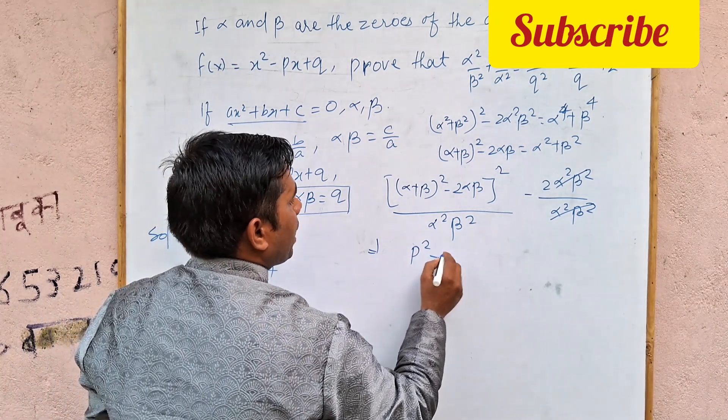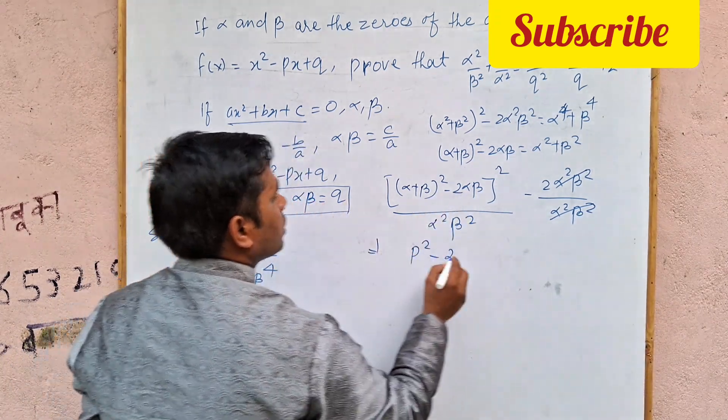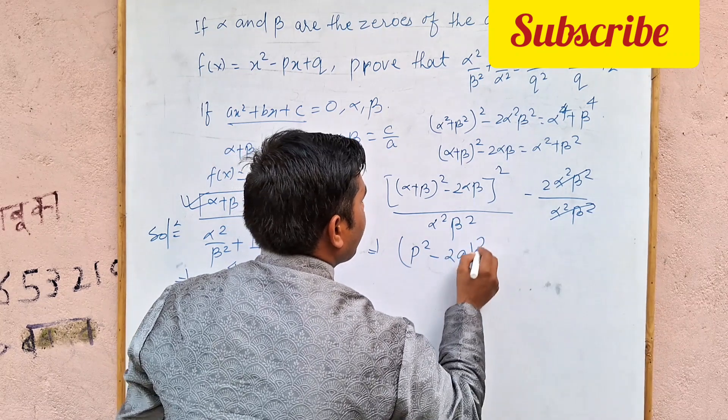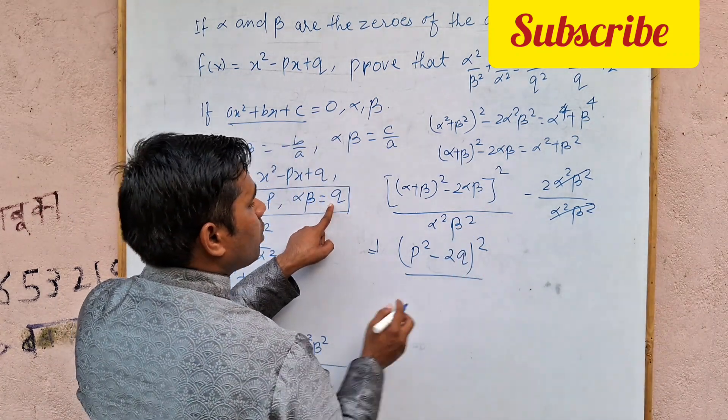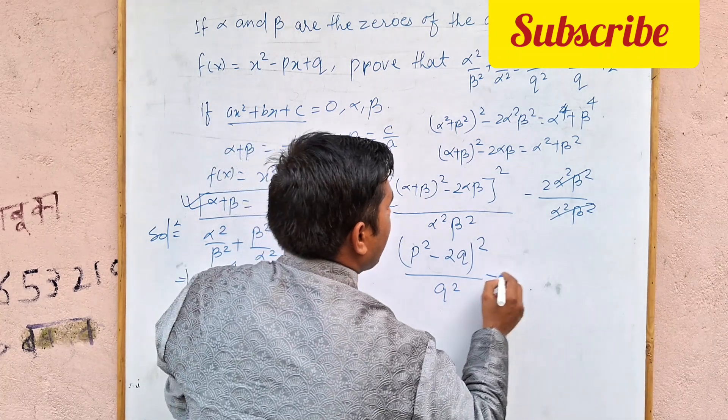P square minus 2, alpha into beta Q, 2Q. Here we go, whole square. And here, alpha square, beta square, this whole square, which is Q square minus 2.